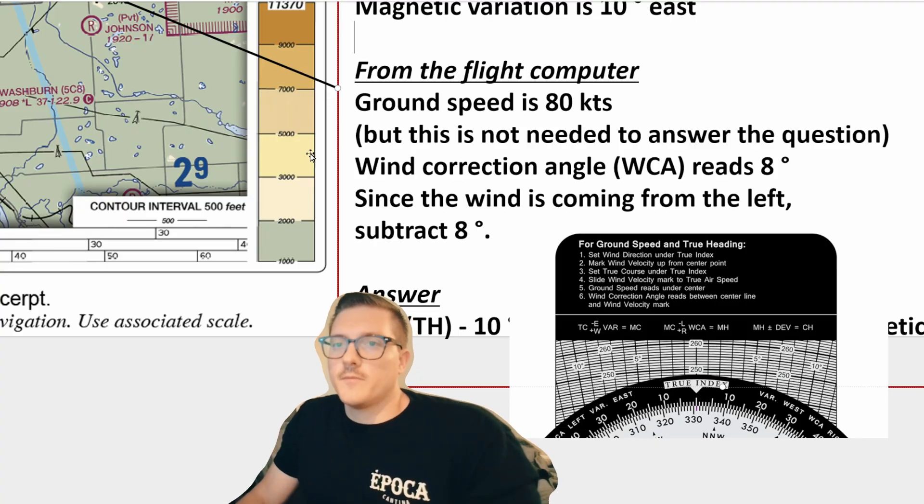So the information that we were able to get off of the flight computer is the wind correction angle. We could have worked more of the problem and figured out our ground speed, but that's unnecessary for this problem. So what we were able to determine is the winds are coming from the left at eight degrees. Since the wind is coming from the left, we're going to subtract. And we know that because down here, we can see when you have your magnetic course and you have winds from the left as a minus. So you're going to subtract it and that's going to give you your magnetic heading.